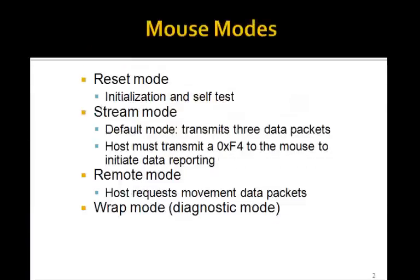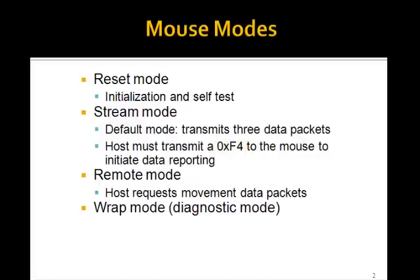The mouse has four modes. The one we're going to be interested in is the stream mode. It's the default mode that transmits three data packets to the host. However, to get it to start transmitting, the host must first transmit a hex F4 to the mouse.